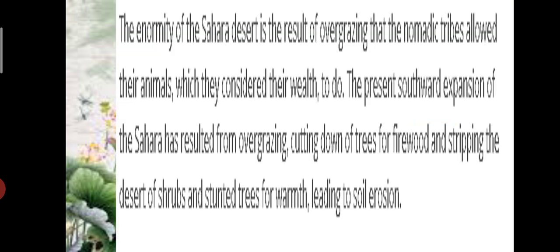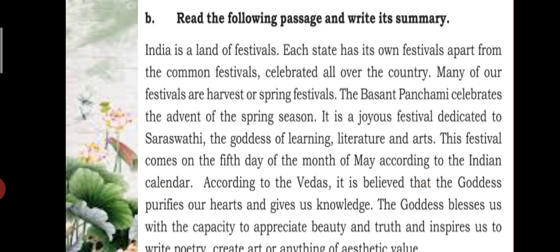The enormity of the Sahara Desert is the result of overgrazing that the nomadic tribes allowed their animals — which they considered their wealth — to do. The present southward expansion of the Sahara has resulted from overgrazing, cutting down of trees for firewood, and stripping the desert of shrubs and stunted trees for warmth, leading to soil erosion. This can be the summary of the original passage. Now you have to read this passage and write its summary.